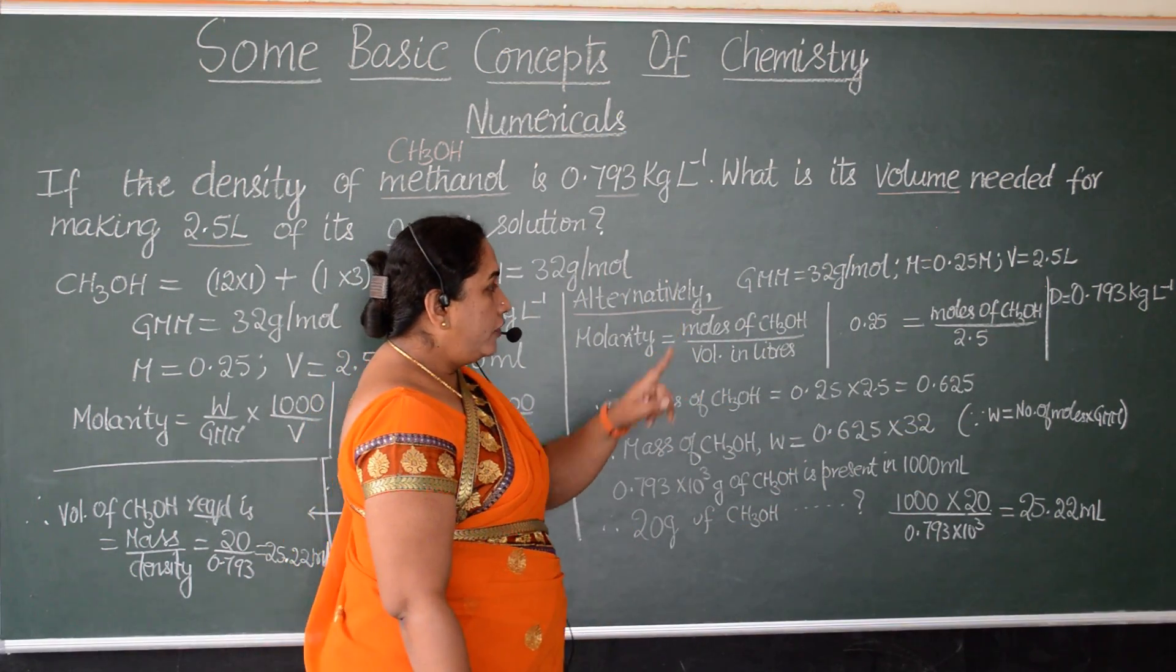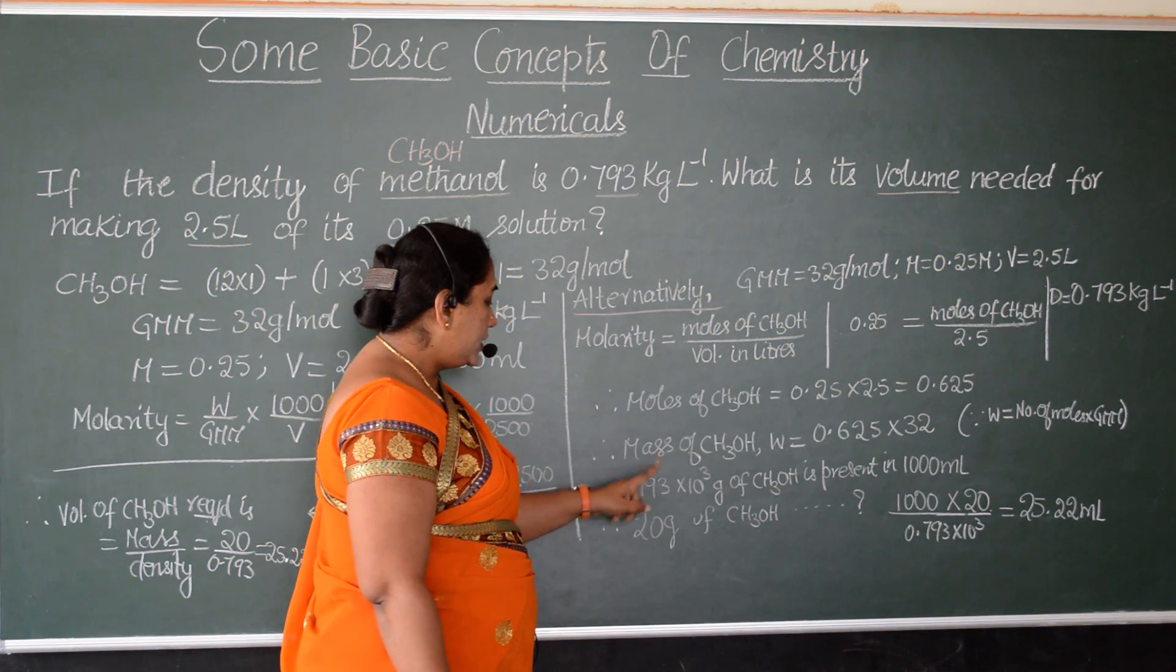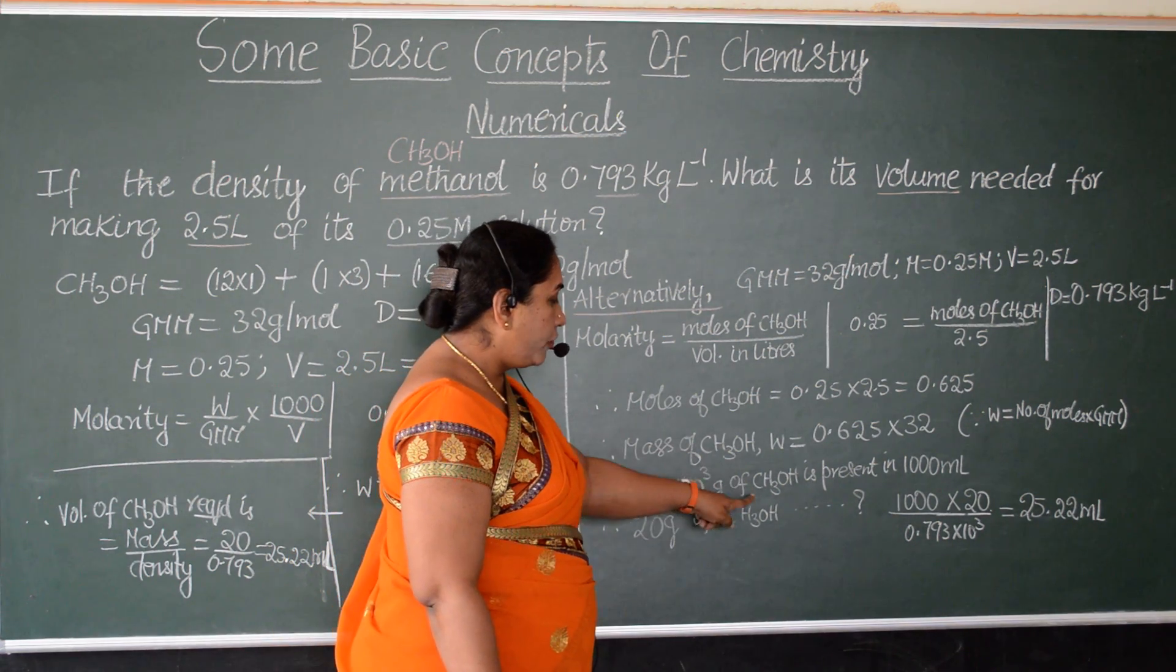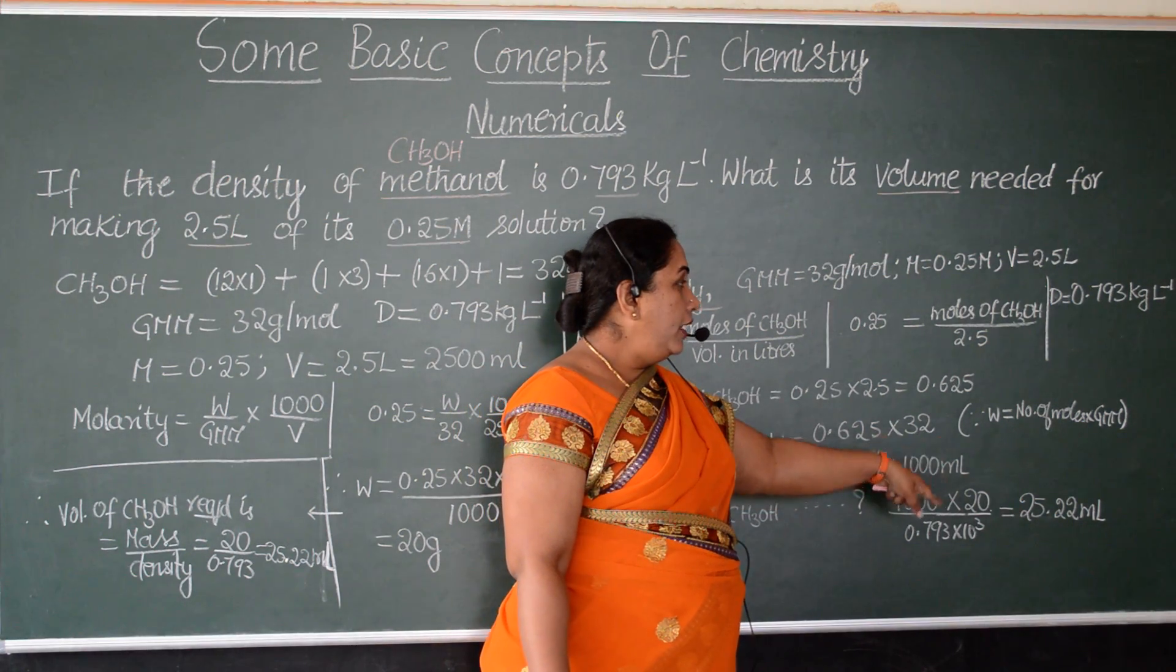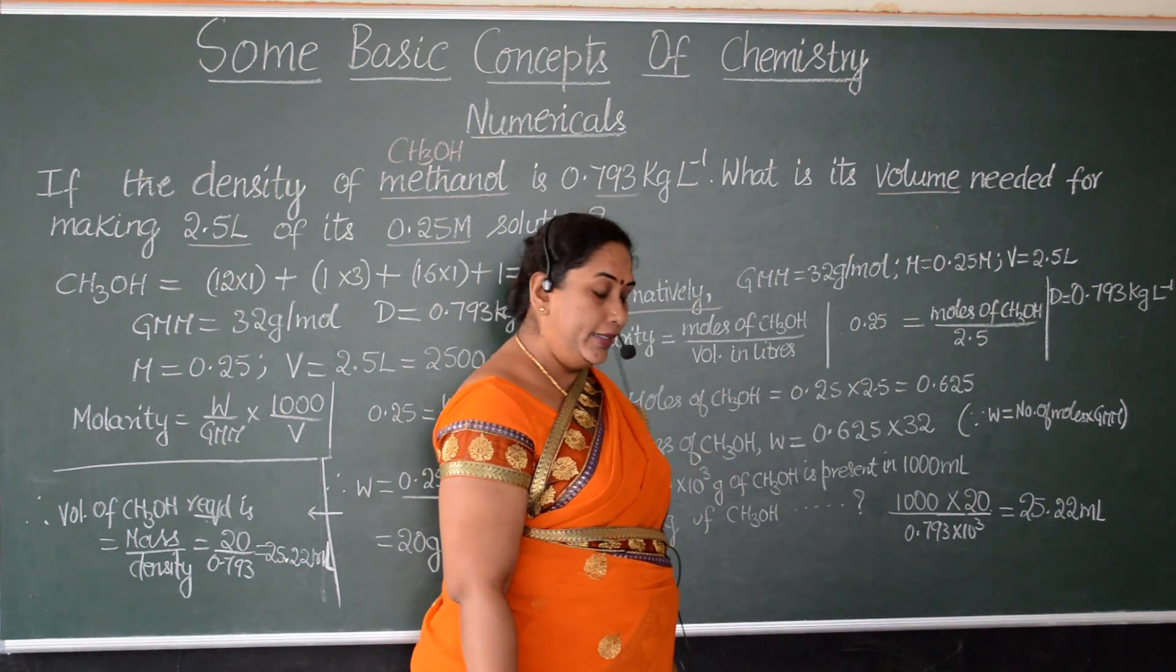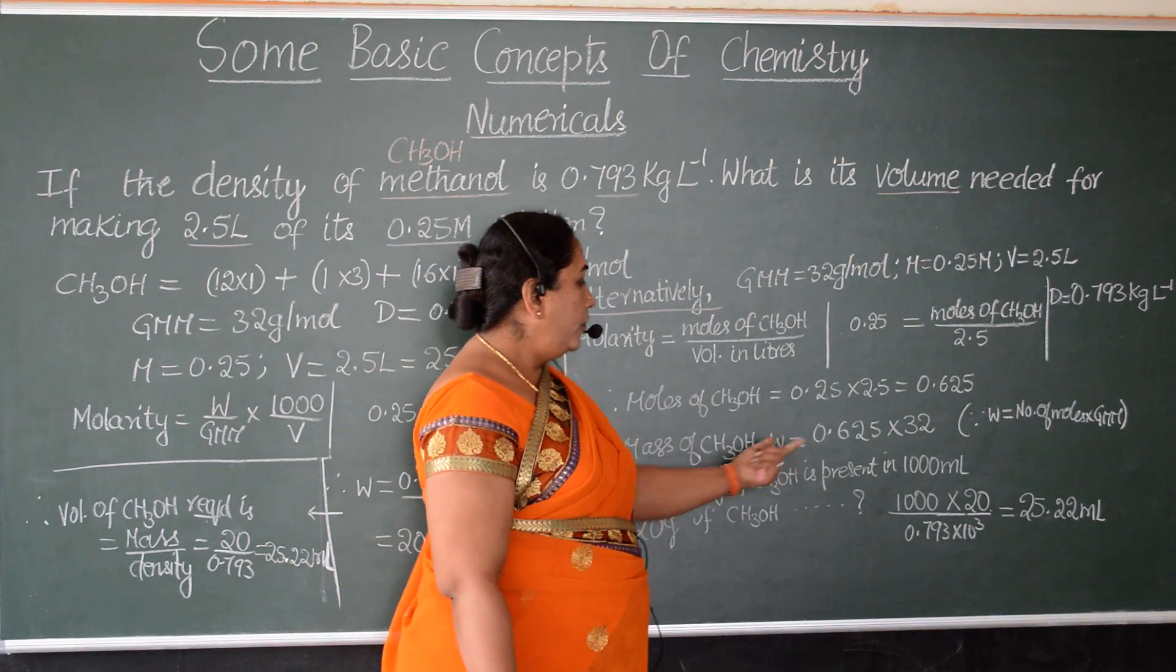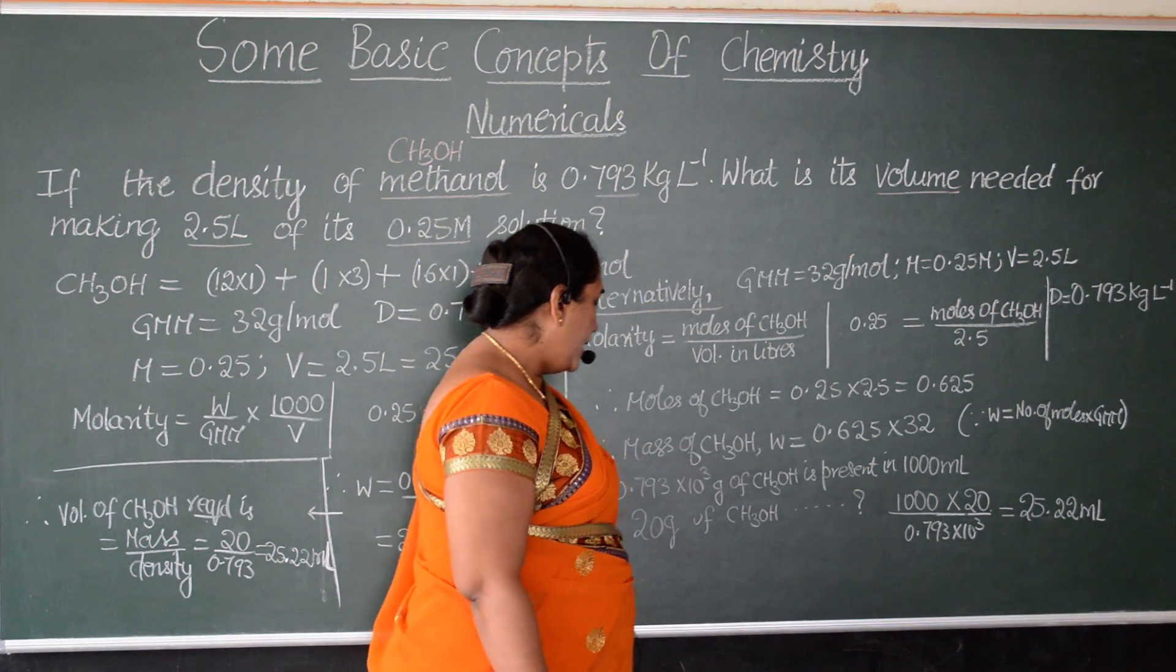Next, we know the value of density as 0.793 kg per liter. So, let us take that in grams, 0.793 into 10 to the power 3 grams of methanol is present in 1000 ml because it is given as per liter. Therefore, 20 grams. So, when we multiply this, what is the value we are going to get? The value of W will be 20 grams.